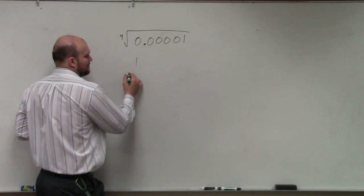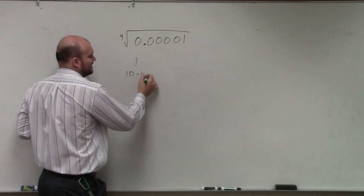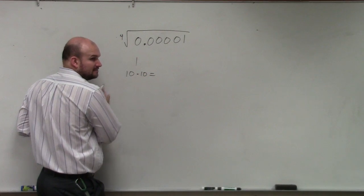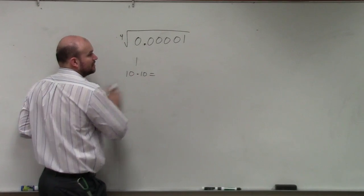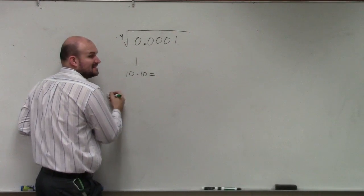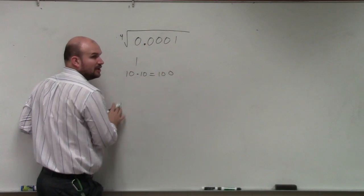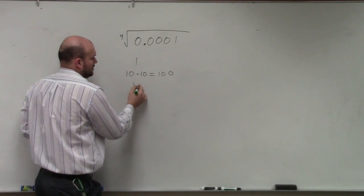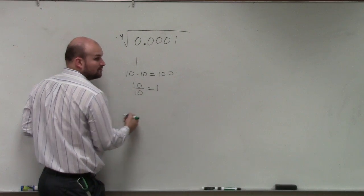When you multiply like 10 times 10, remember we add—yes, alright. When you do 10 times 10, you know the answer is 100, right? Well, if you do 10 divided by 10, that equals 1.